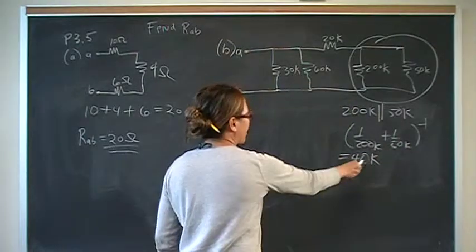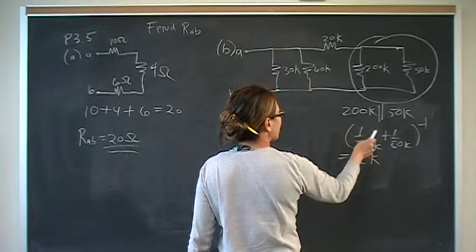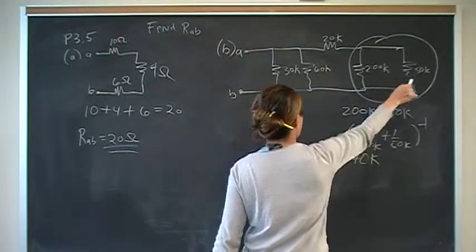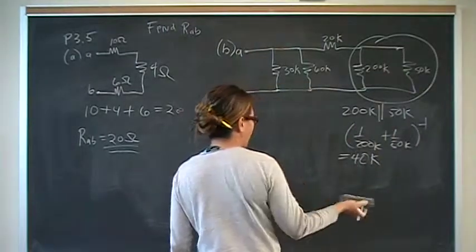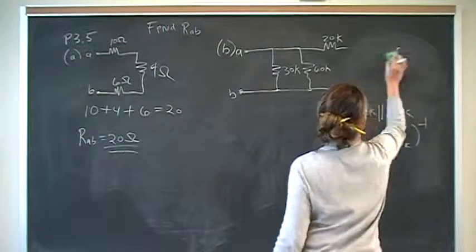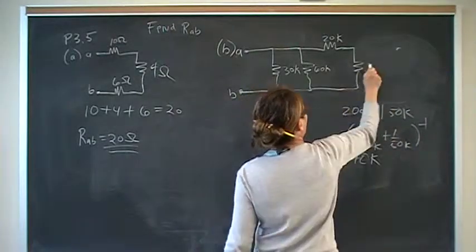And I feel good about that number because when you're looking at parallel connections, the new resistance should be less than the lowest number. So it's less than 50. So I feel good that I didn't make a mistake. So replace that in your circuit for 40.